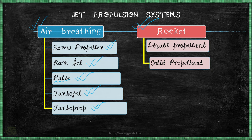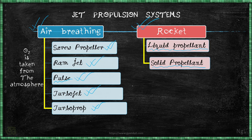Under rocket propulsion, there are two classifications: liquid propellant and solid propellant. A rocket will initially be in the atmosphere but after a few seconds or minutes it will escape the atmosphere. Once outside, there is no oxygen for combustion, so the rocket must carry both fuel and oxygen. If the fuel and oxygen are carried in liquid form, it is called a liquid propellant; if carried in solid form, it is called a solid propellant.